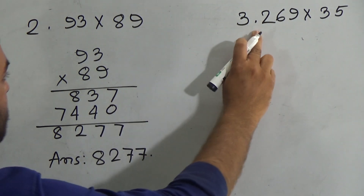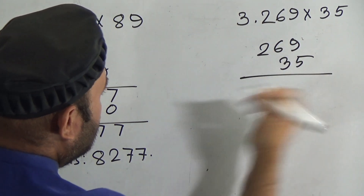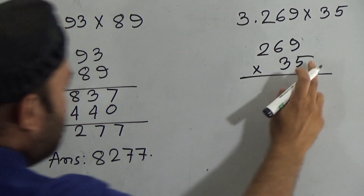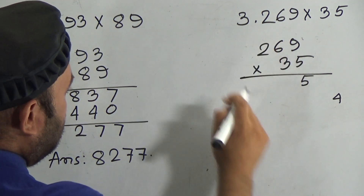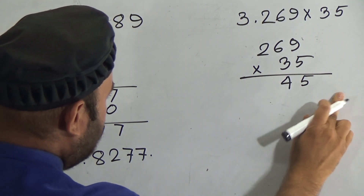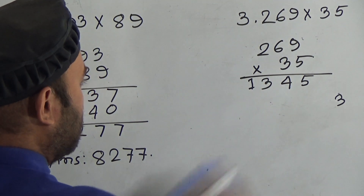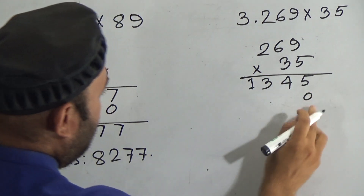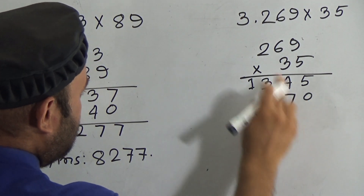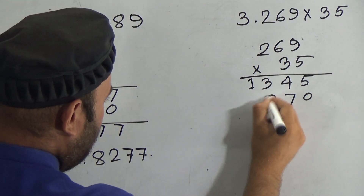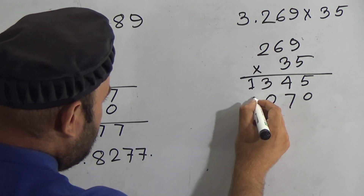Now question number three: 269 multiplied by 35. Draw a line and put the multiplication sign. Five nines are 45, carry four; five sixes are 30 plus four is 34, carry three; five twos are ten plus three is thirteen. Now multiply by three — use zero first. Nine threes are 27, carry two; three sixes are 18 plus two is 20, carry two; three twos are six plus two is eight.